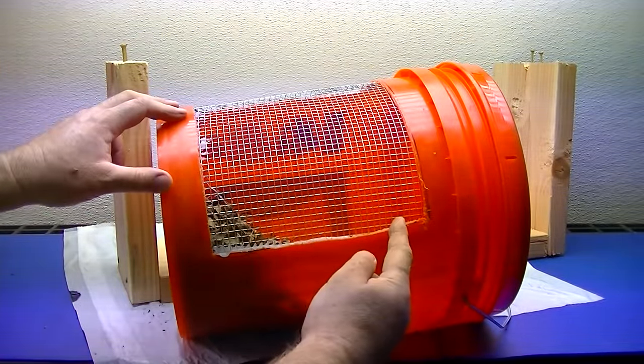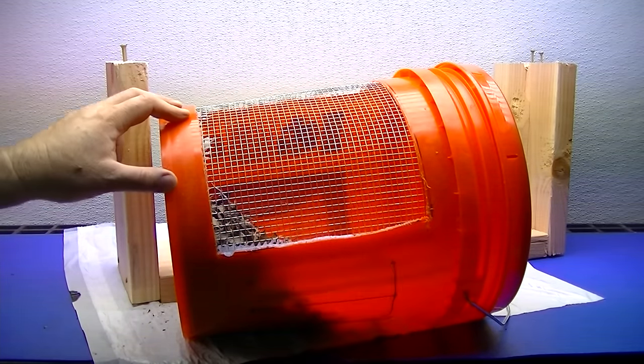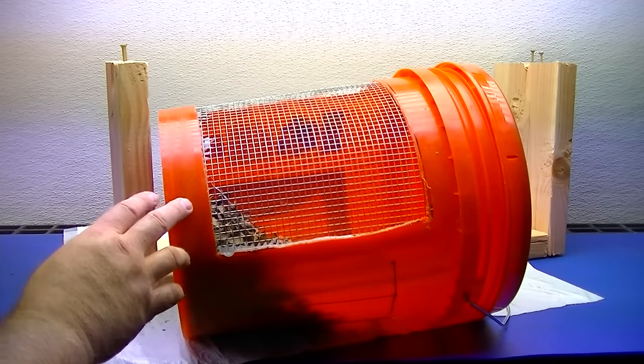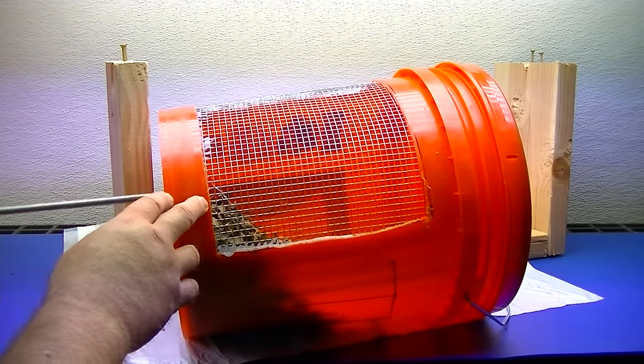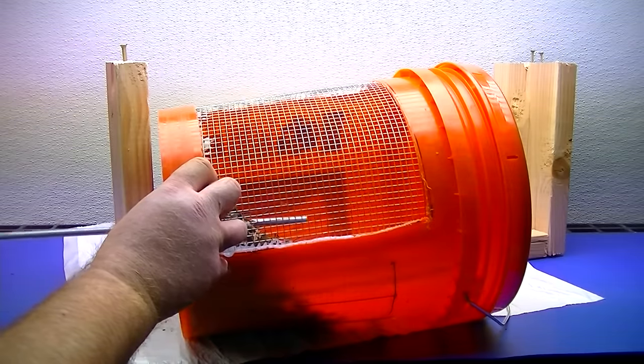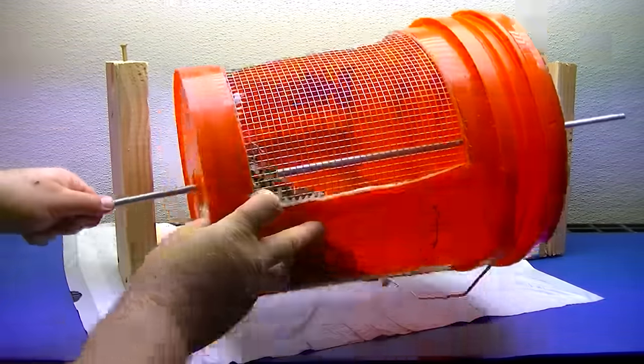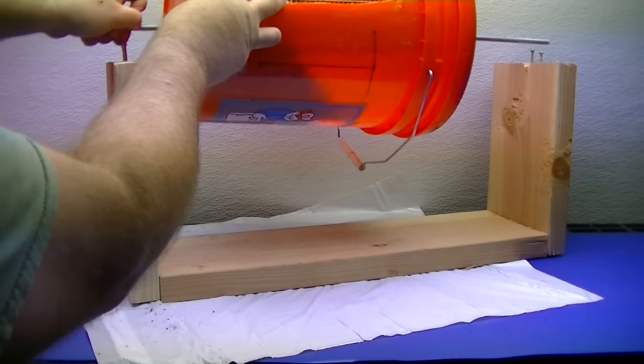Now when you fill up the bucket on the end part, you're only going to fill it up about three-quarters of the way. You don't ever want to fill the bucket all the way. Now we're just going to take the metal rod, slide it through the bottom, and then come out the top.